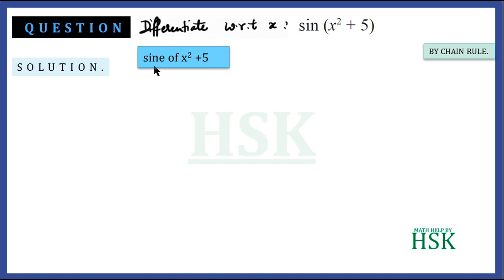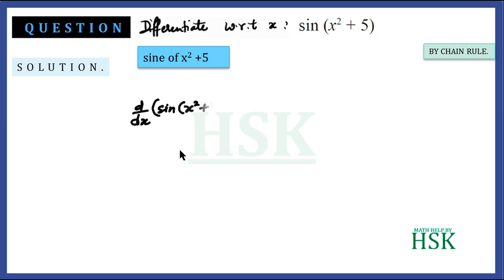Because we read sine first and then x² + 5, we differentiate sine first and then x² + 5. In the chain rule, d/dx of sin(x² + 5) equals: first, differentiating sine gives cos.